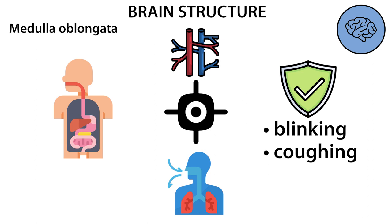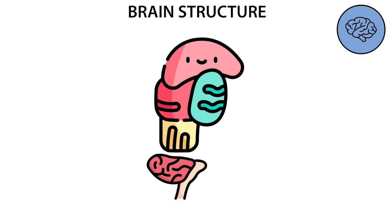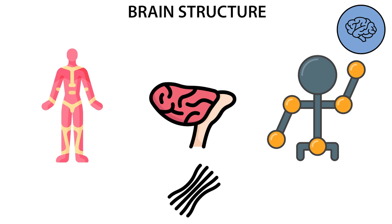The cerebellum is located behind the medulla oblongata. The cerebellum receives information from muscles, tendons, and motor centers of the cerebellar cortex. This allows the cerebellum to control balance, muscle tone, and posture.